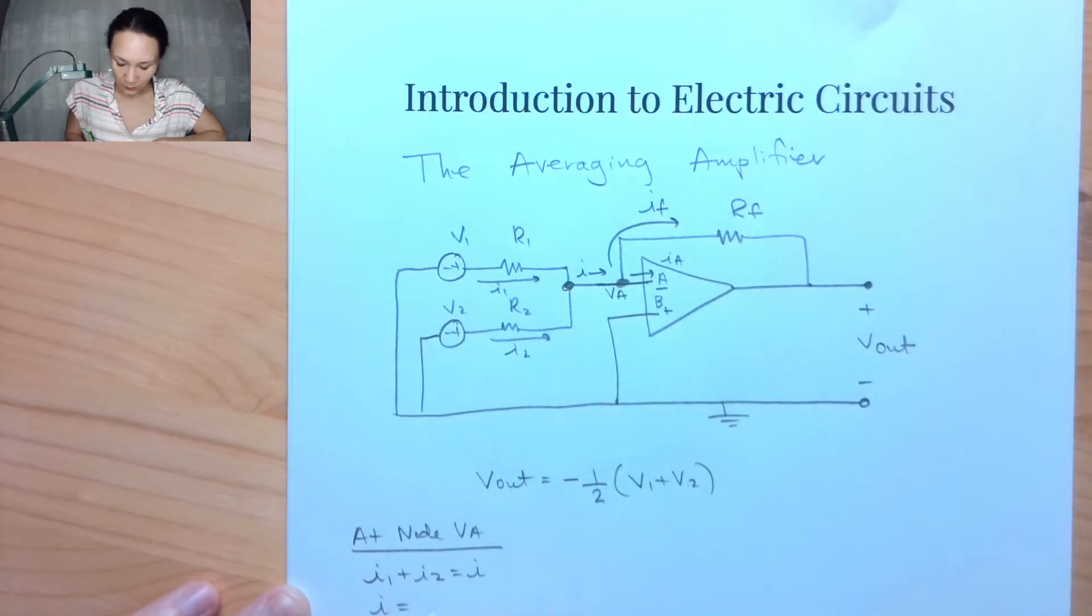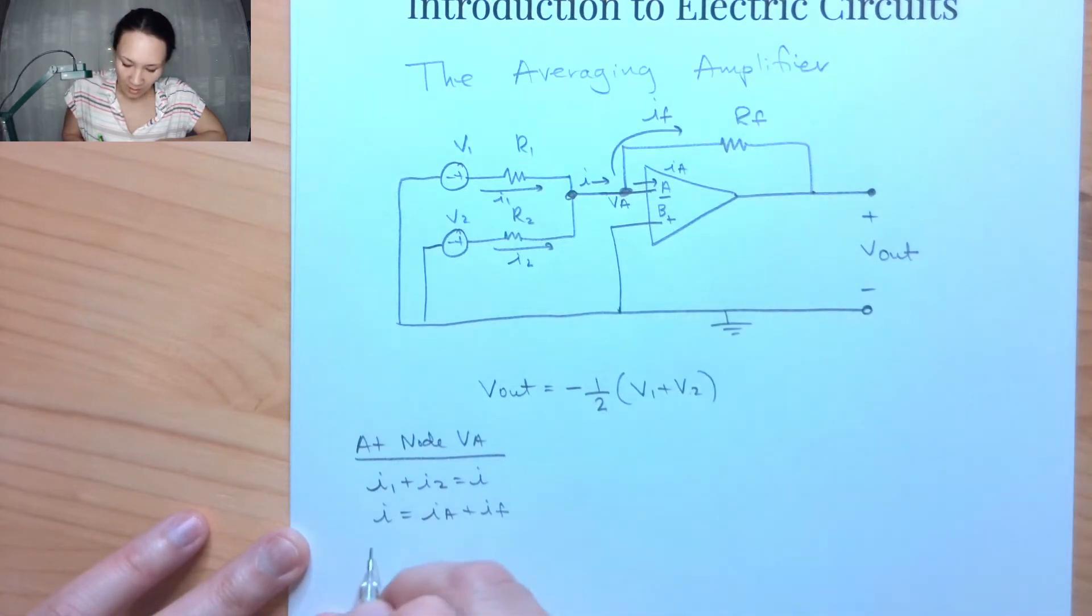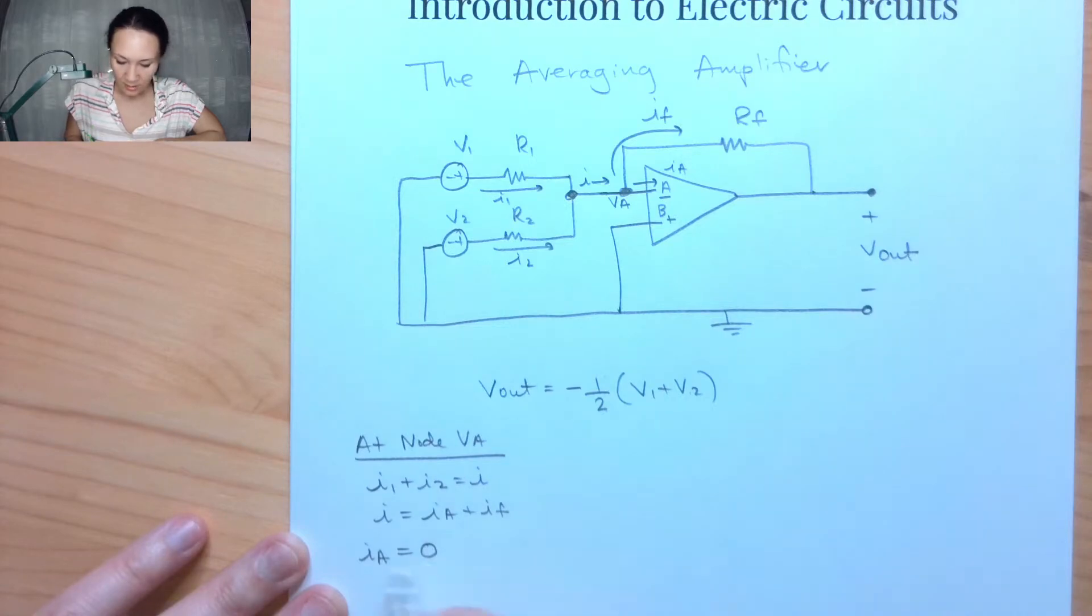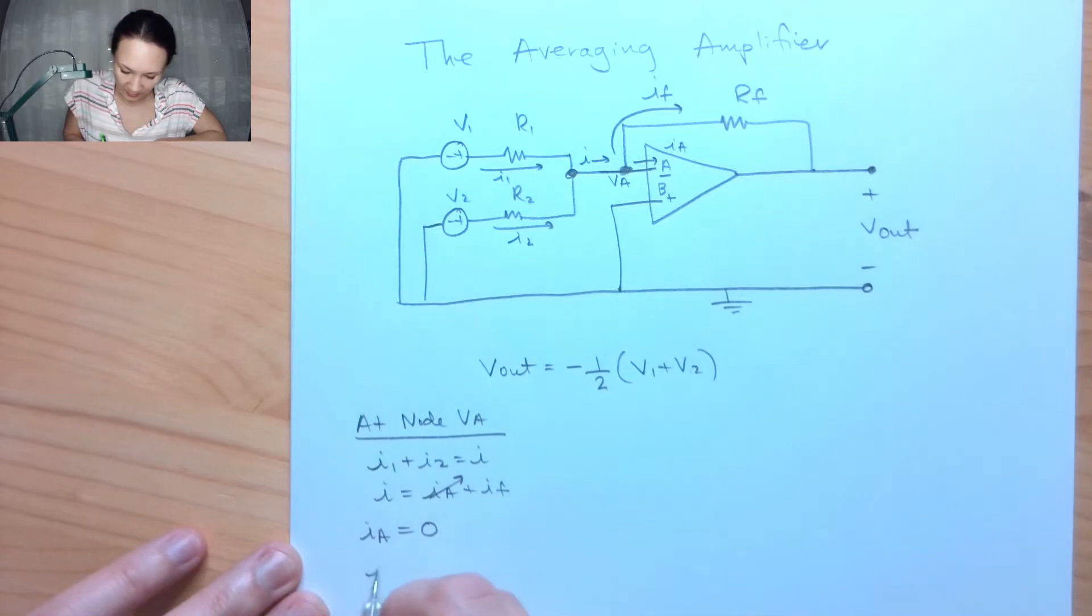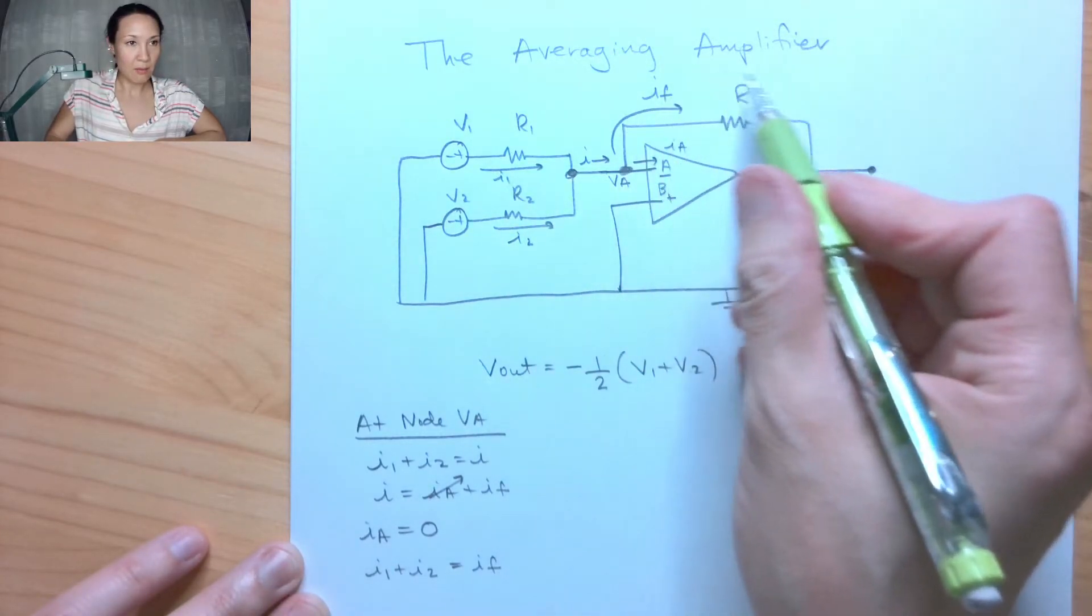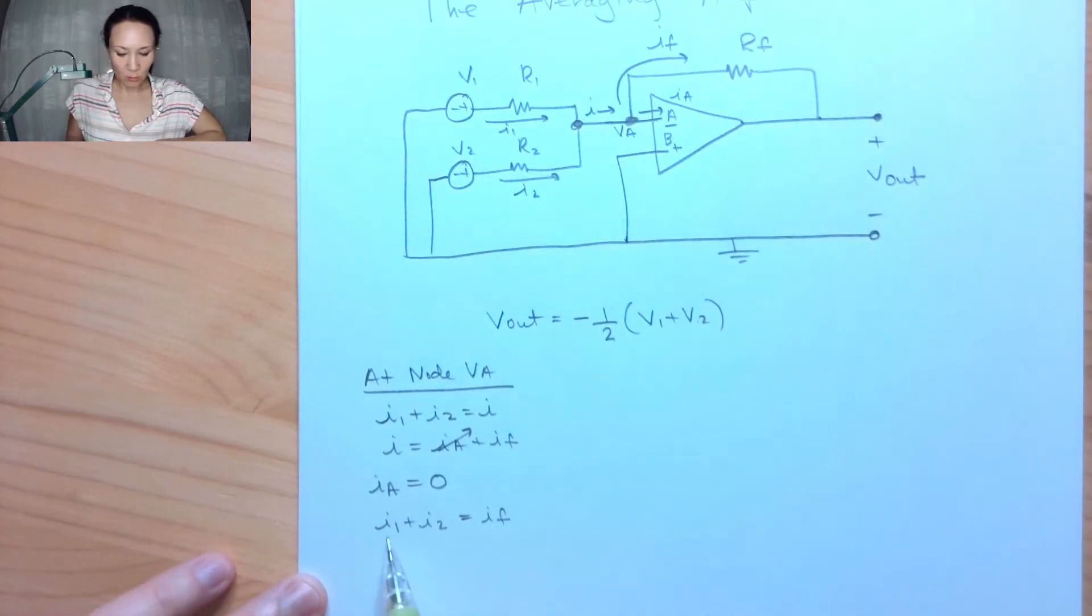So I have I is equal to IA plus IF. But since I'm using the ideal op-amp approximation, by the ideal op-amp approximations, I have that IA is so negligible that I may consider it to be zero. So if IA is zero, that goes away. So if I combine these two equations, that gives me I1 plus I2 is equal to IF. So all the current that combines here is going to come up and take the path of the feedback loop.